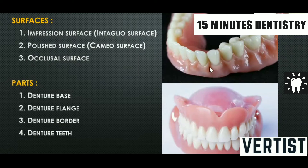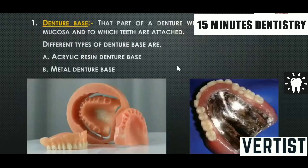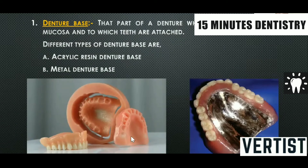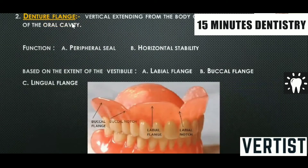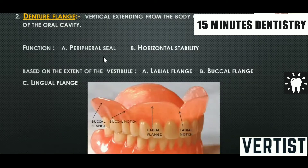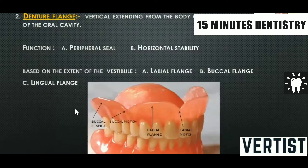The parts of the denture are basically four: the denture base, denture flanges, borders of the denture, and denture teeth. The denture base is the part that rests on the oral mucosa to which the teeth are attached; it could be acrylic resin or metallic. Denture flanges are vertical extensions from the body of the denture into the vestibule, helping in peripheral seal and horizontal stability. They are classified as labial, buccal, or lingual flange.